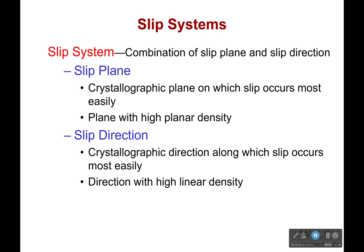Hello everyone! So now we're going to talk about slip systems. Like I said last time, if there's a long distance for an atom to go, it's really hard for it to slip in that direction. So a slip system is a combination of a slip plane and a slip direction. A slip plane is a close-packed plane — it's the crystallographic plane on which slip occurs most easily. The best way to know this is it's the plane with the highest planar density.